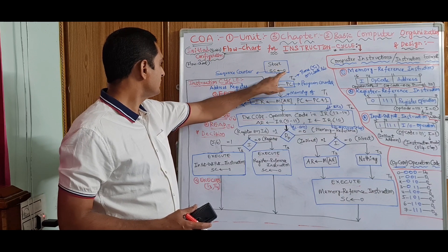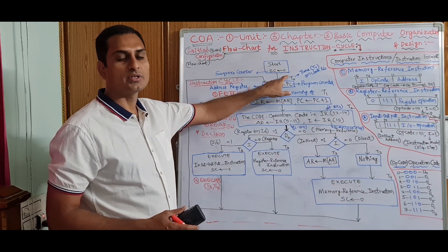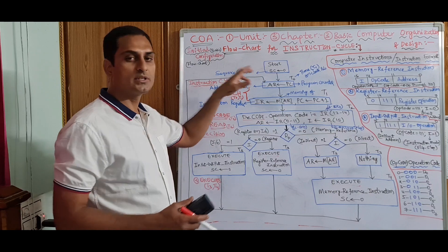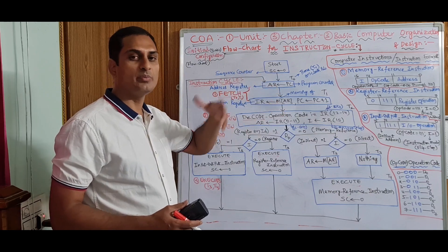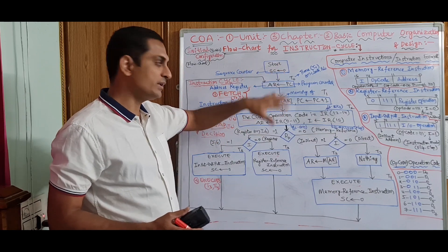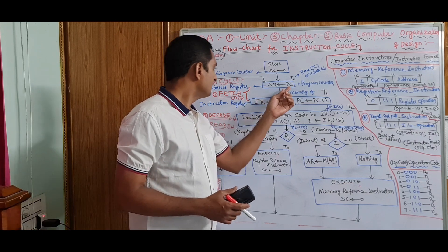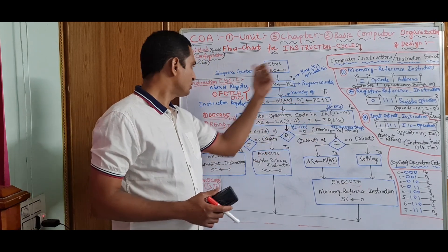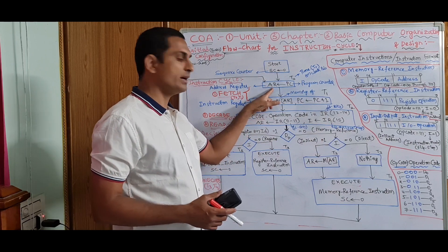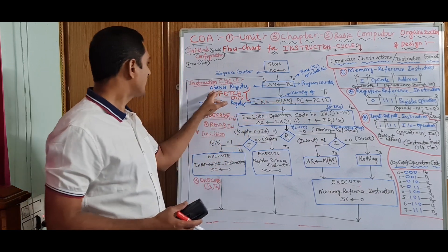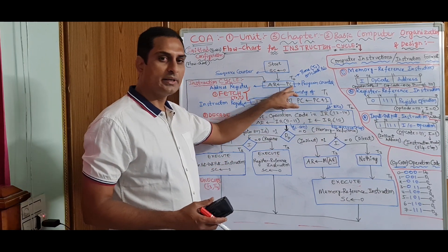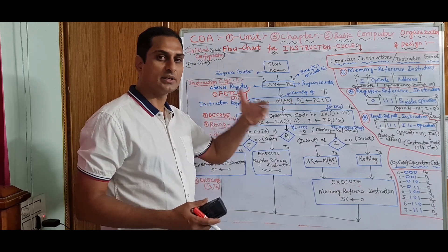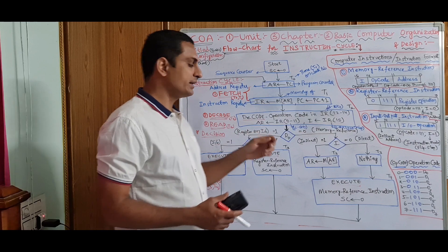Start: SC should be 0. First, initially, SC means Sequence Counter — we need to make it 0. From that we will start. And we will transfer the Program Counter instruction into AR, nothing but the Address Register. Program Counter data is transferred to AR — the address register — instruction cycle.